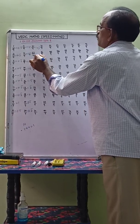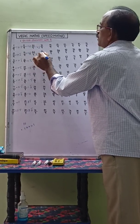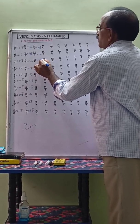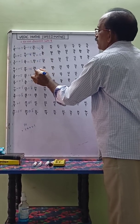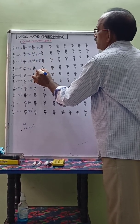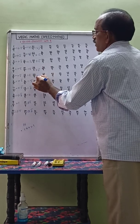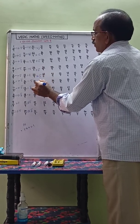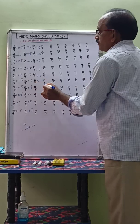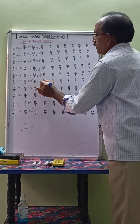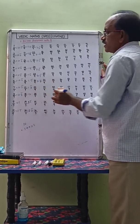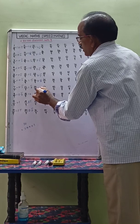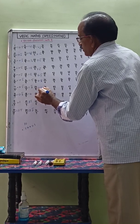22 by 9 equals 2.4 bar. 23 by 9 equals 2.5 bar. 24 by 9 equals 2.6 bar. 25 by 9 equals 2.7 bar. 26 by 9 equals 2.8 bar. 27 by 9 equals 3.